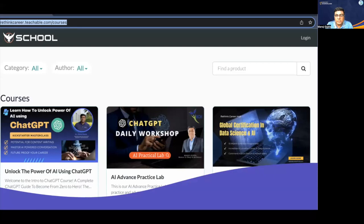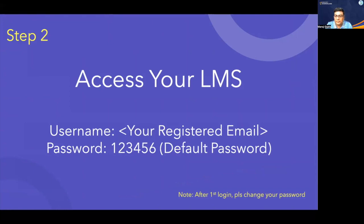Here you can see all the courses like ChatGPT, ChatGPT Daily Workshop, and Global Certification — all would be there. Since you have enrolled for the ChatGPT program, it will be enabled for you. The secondary step is to use your registered email ID — the email you used to enroll for the program — along with the default password 123456 to log into the system. Once successfully logged in, you can change the password as per your need.